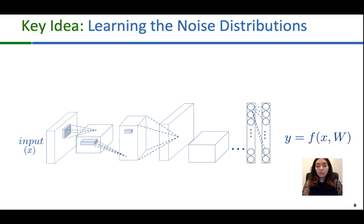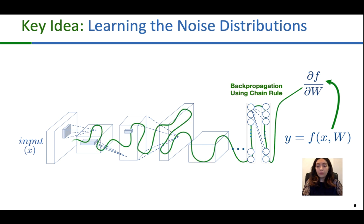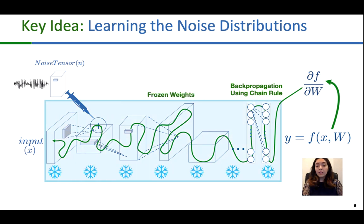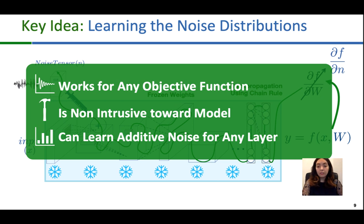The key idea of Shredder is to use an end-to-end gradient-based approach to learn the noise distributions. When you normally train a neural network, you calculate the gradients of the output with respect to the weights and then update the weights using backpropagation and the chain rule. Here, we inject noise in the neural network, we freeze the network, and then we calculate the gradients with respect to the noise and update the noise parameters. This approach allows us to optimize the noise for any objective function. It is non-intrusive to the model, which is important when companies don't want to change their already deployed models and retrain them from scratch, and can learn optimized additive noise for any layer, even the input.